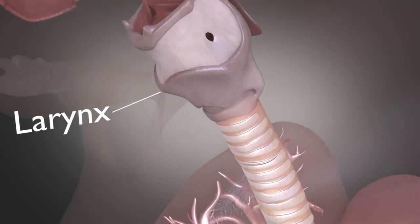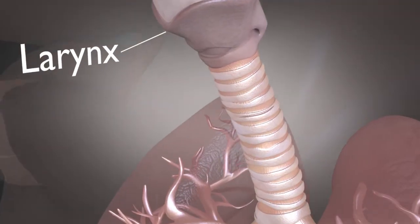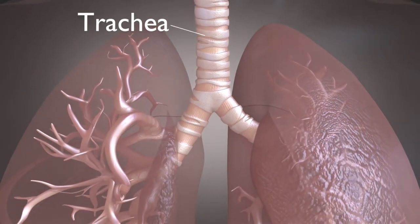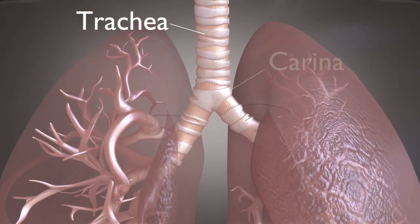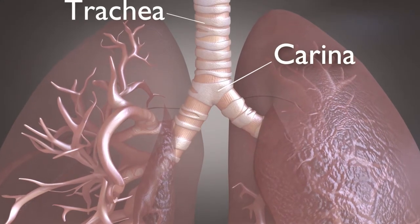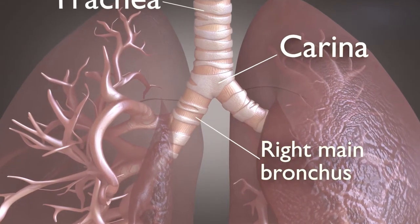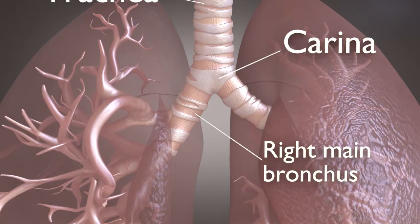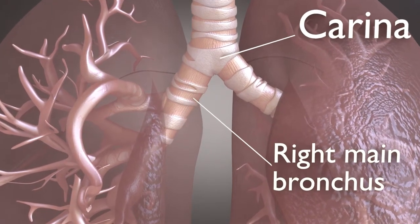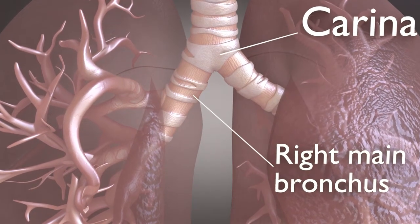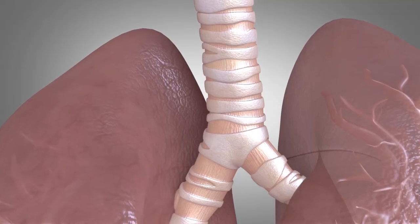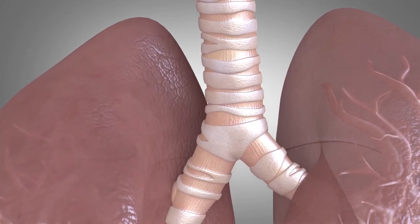Below the larynx is the trachea, a pipe that connects the upper airways to the lungs. The trachea divides into the left and right main bronchus at a junction called the carina to serve each lung. These main bronchi are of relevance because the right main bronchus sits at a less acute angle, with the proximal upper bronchus dividing off the right main bronchus very soon after this division at the carina.